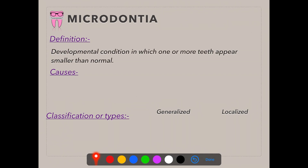Microdontia is a developmental condition in which one or more teeth appear smaller than normal. The causes of microdontia are Down syndrome and ectodermal dysplasia. All developmental disturbances affecting oral and paraoral structures are either associated with a genetic condition or a systemic condition, and mostly these developmental disturbances are generalized.